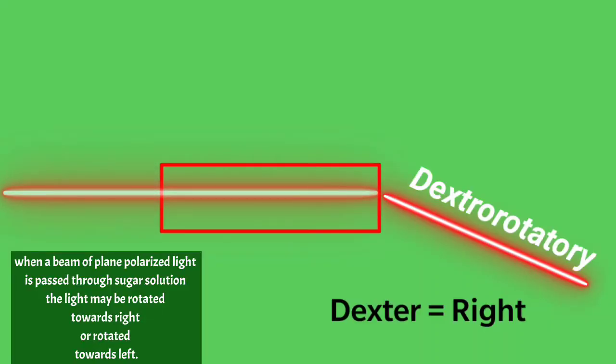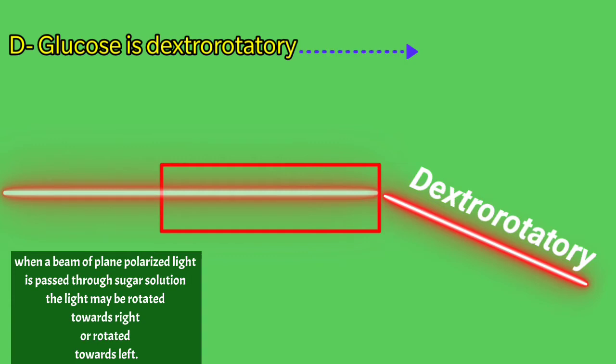If light is rotated towards right, then it is called dextrorotatory and here example is D-glucose. This D-glucose is dextrorotatory that can be represented as D plus glucose. So this plus symbol here indicates dextrorotatory nature of the sugar whereas the capital D indicates the orientation of H and OH groups on the last but one carbon of the sugar that is glucose.